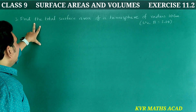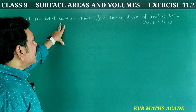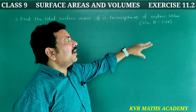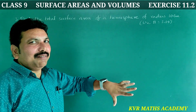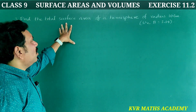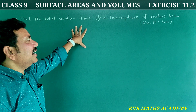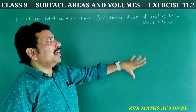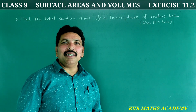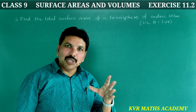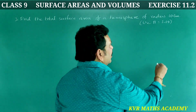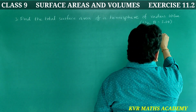Third question: Find the total surface area of a hemisphere of radius 10 centimetres. A hemisphere means a sphere cut in half.